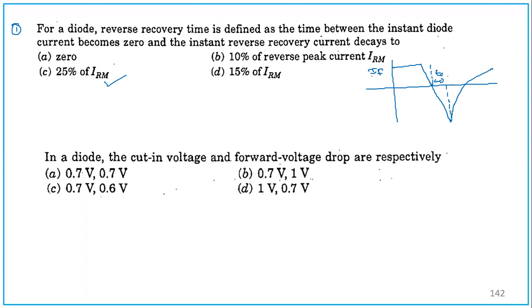This is what we call as TA, and this is IRR, the maximum value. The instant reverse current decays to, this complete will be TRR and this will be TB. This is 1/4, so 25% of IRR. What do you mean by reverse recovery time? Reverse recovery time TRR, which is equal to TA plus TB, is the time instant in which the diode current becomes zero and the instant the reverse recovery current, it is not the point up to zero, it is up to here only. So it becomes 1/4 or 25% of IRR. This IRM and IRR are all the same.